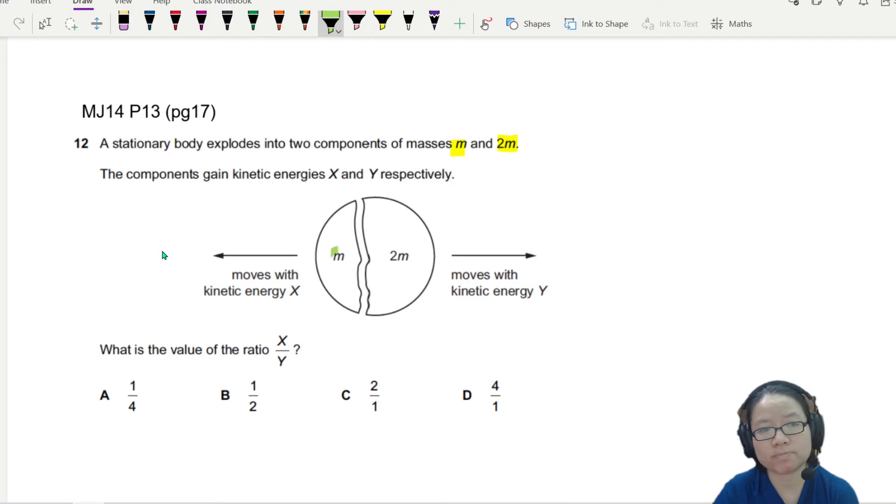So you have two pieces, one is moving to the left, and you have 2m, the heavier piece, or the piece with more mass, moving to the right. So the components gain kinetic energy x and y, respectively.